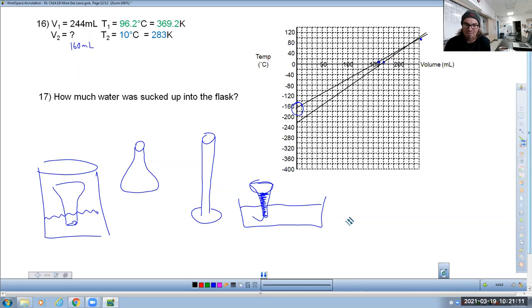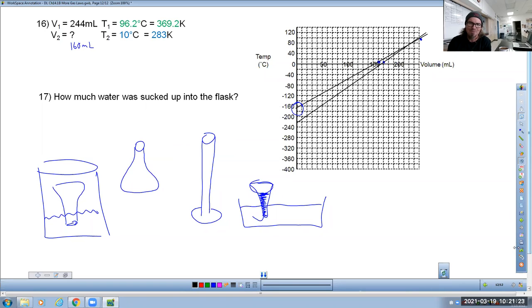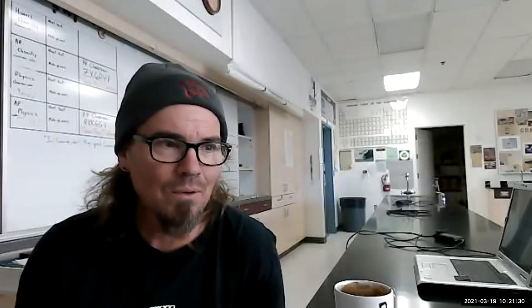You're going to finish up the rest of this homework assignment — problems 10 through 15 on your own. That's six problems plus a fun at-home lab. What a great class — aren't you glad you chose honors chemistry instead of regular chemistry? See you on the other side.